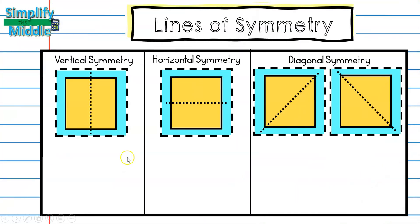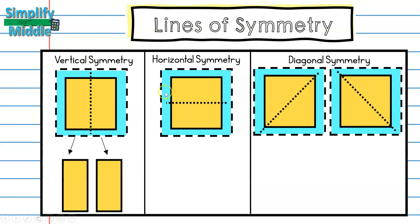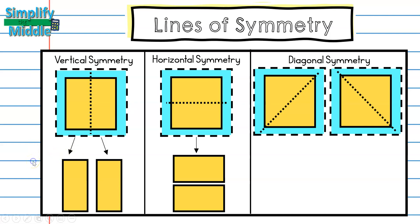Let's talk about the different types. We have vertical symmetry, where my fold is going to be top to bottom. We have horizontal symmetry, where my fold is going to be from side to side. And then we have diagonal symmetry, where I could fold diagonally in either direction.